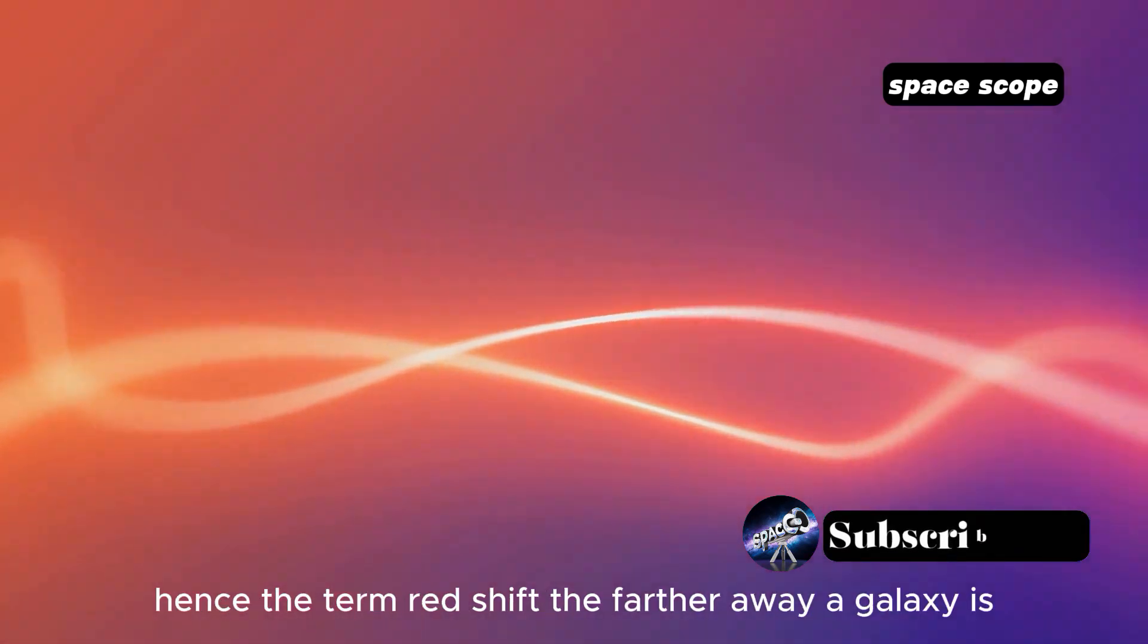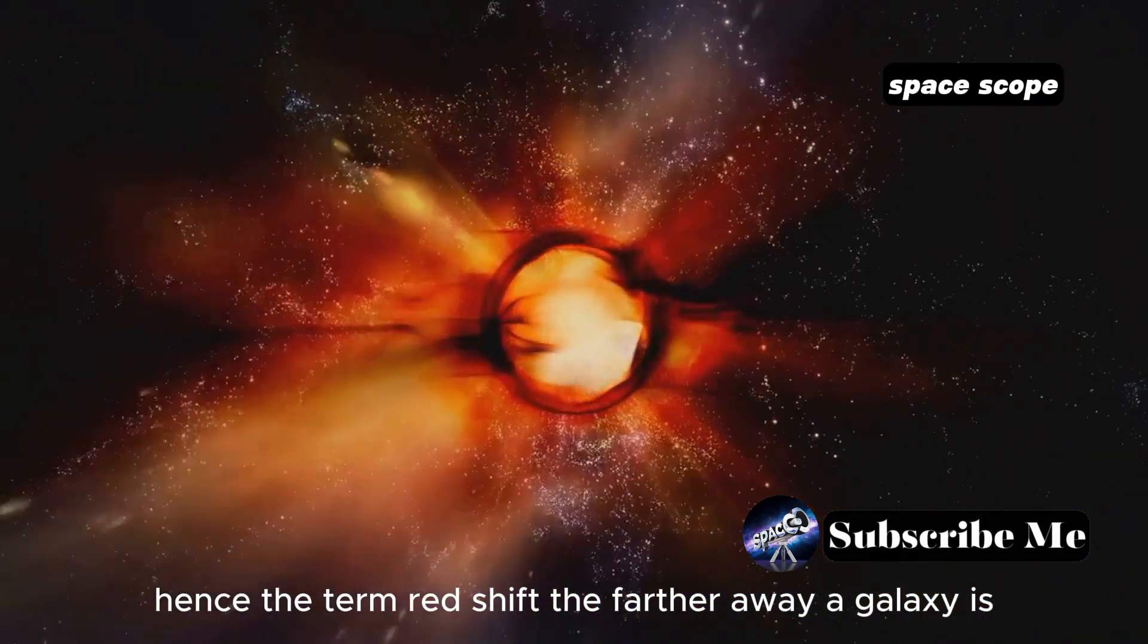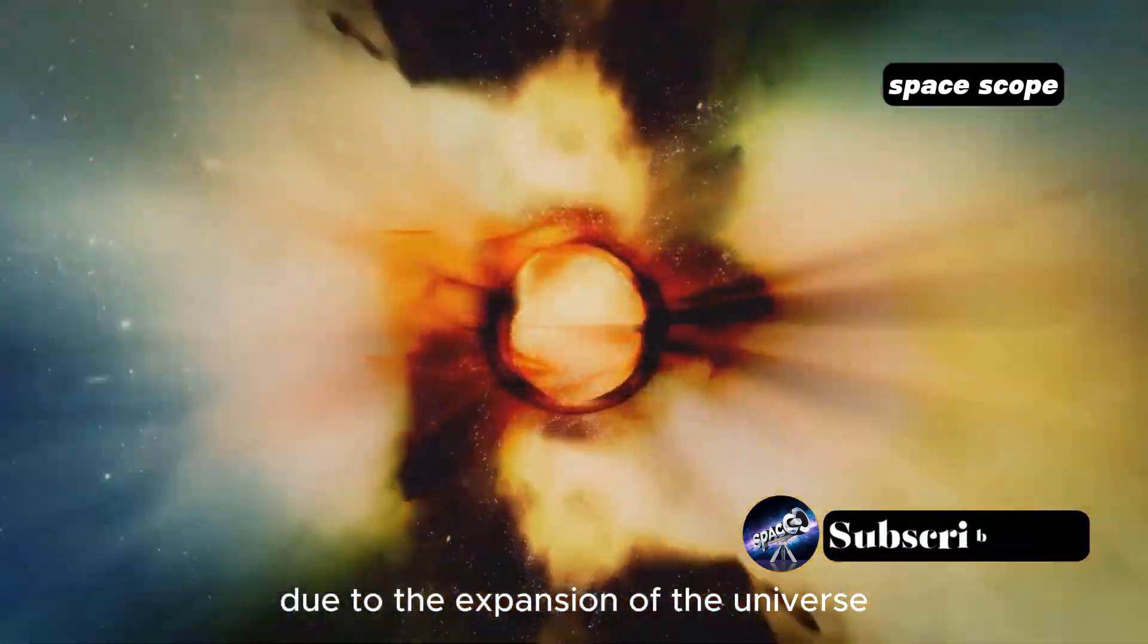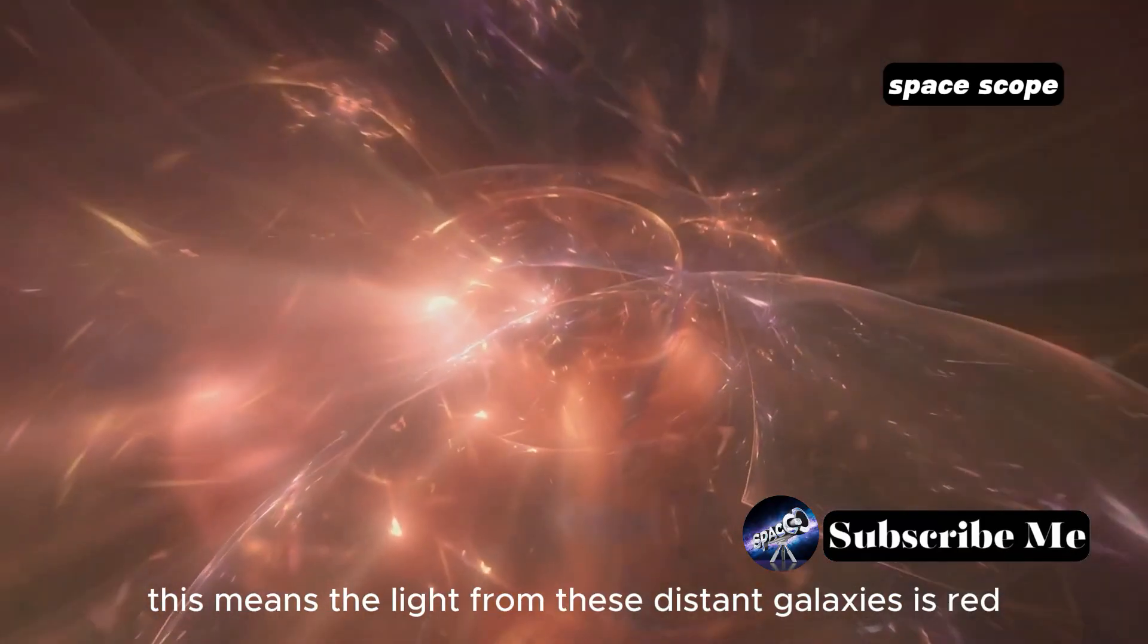This stretching shifts the light towards the red end of the spectrum, hence the term redshift. The farther away a galaxy is, the faster it's moving away from us due to the expansion of the universe. This means the light from these distant galaxies is redshifted significantly, often falling into the infrared part of the spectrum.